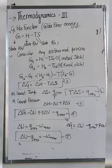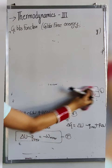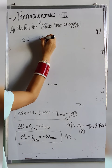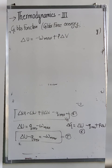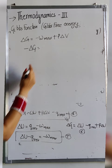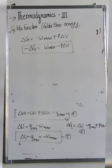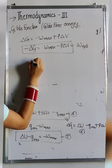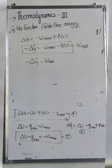After substitution, delta U minus Q reversible plus P times delta V, the Q reversible terms cancel. The final expression gives delta G equals negative work maximum plus P times delta V, which means the decrease in Gibbs free energy equals the maximum work minus the pressure-volume work, i.e., the net work.